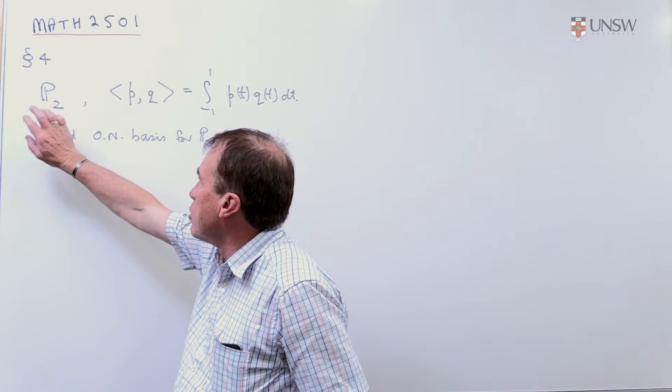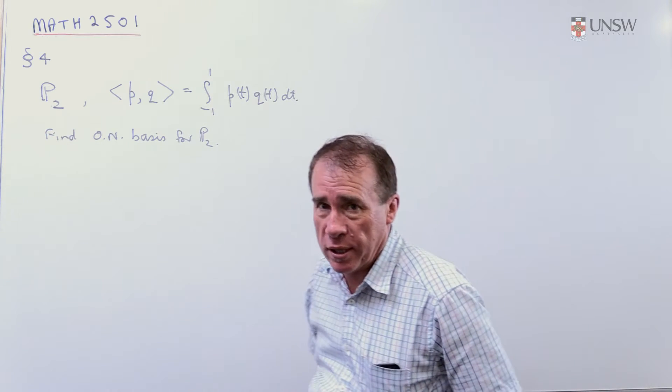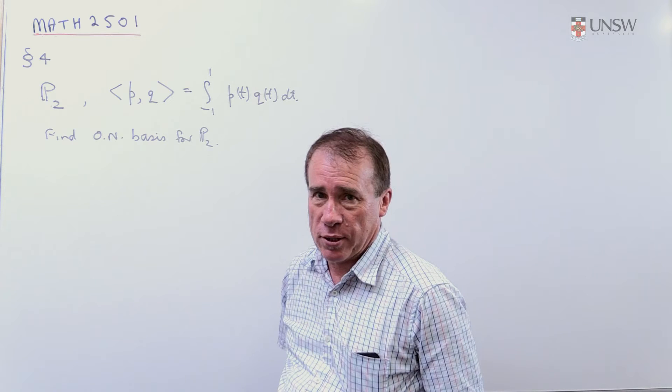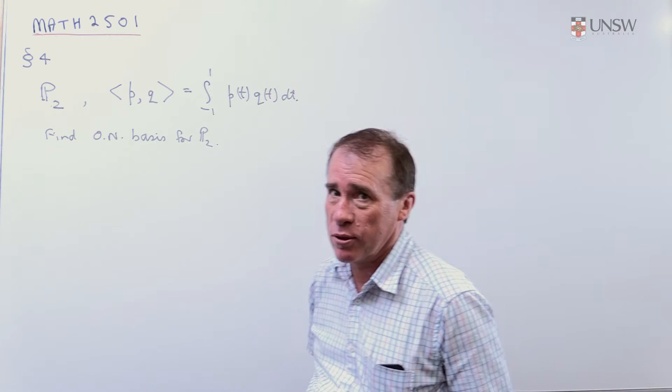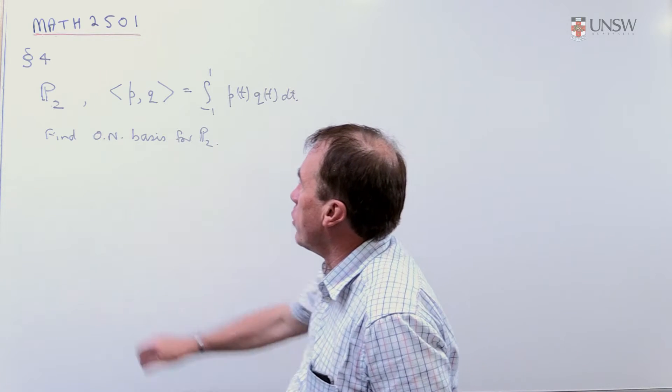So we're working in the vector space. Now I'm changing the question a little bit, please. Notice it's P3 in the question, but the arithmetic takes too long. Once you've seen it done for P2, you can extend it yourself to P3 if you're interested in seeing that. So we're going to work with P2.